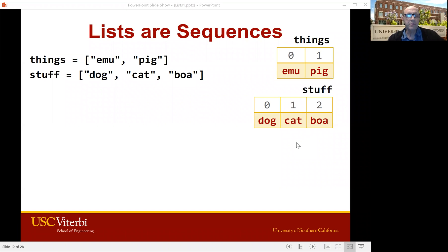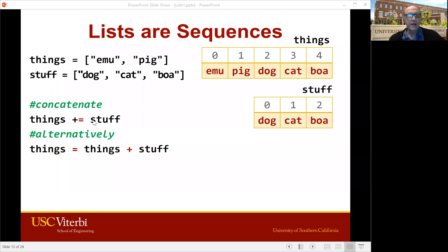So here's an example. We have one list called things and it has two strings on it, emu and pig. We have another list called stuff and it has three strings on it. So they're both lists of strings. And if we say things plus equals stuff, that puts the stuff, which is these three things, on the end of the things list. So things was originally just emu and pig, and now we've got dog, cat, and boa attached to the end of it.